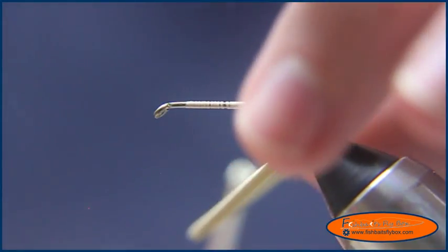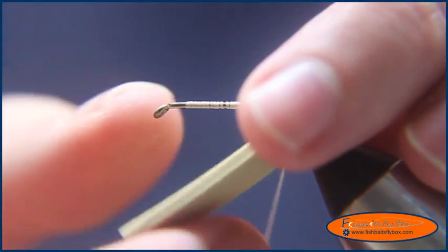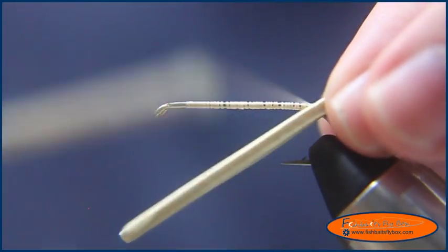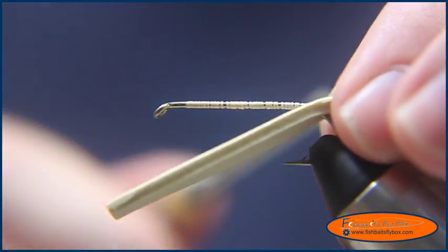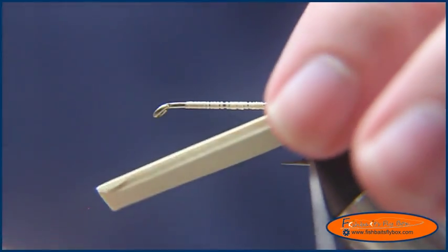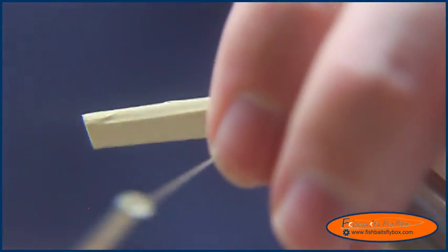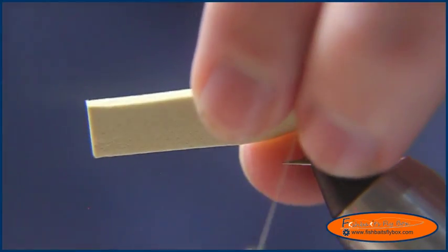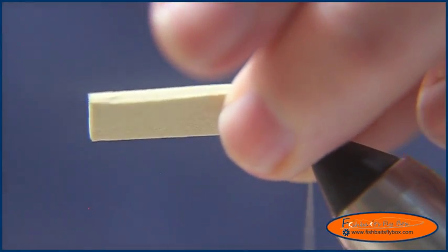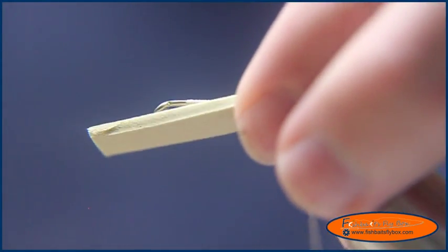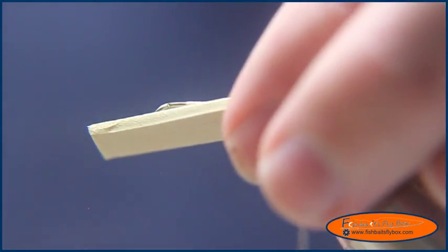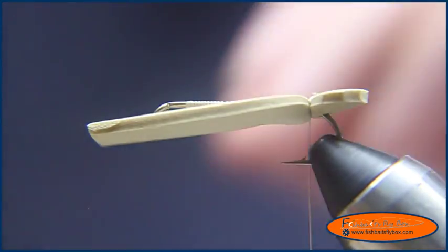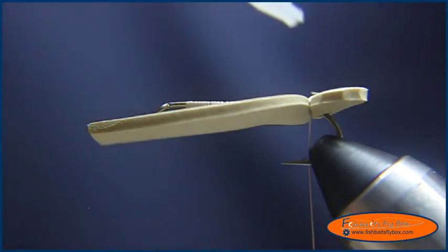I'm going to take my craft foam, bring it up to the thread, and bring the thread around lightly, loosely. Kind of do a wrap there, until you get all the way around it, and cinch down on it, like so. And then from there, I'm going to put a drop of super glue on that joint.